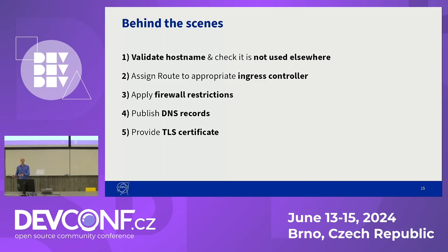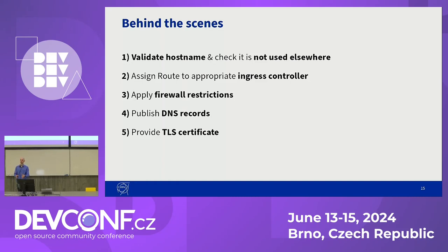We also need to make sure that the hostname is not already used somewhere else to avoid conflict. Then we need to assign the route to an appropriate ingress controller, because as we will see later, we are usually having multiple ingress controllers in each cluster. We need to apply any possible firewall restrictions, such as should this website be accessible only from the intranet or also from the internet. Then we need to publish DNS records for the hostname so the client knows which server to talk to. And finally, we need to provide a TLS certificate, because that's just a given for any website.